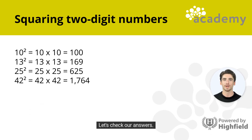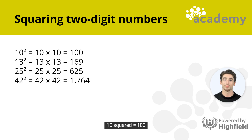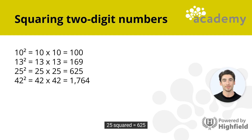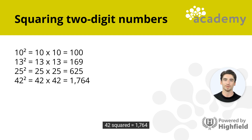Let's check our answers. 10 squared equals 100. 13 squared equals 169. 25 squared equals 625. 42 squared equals 1764.